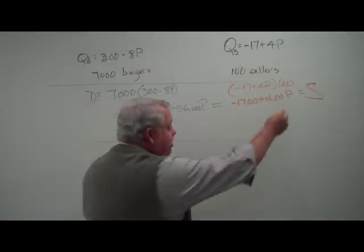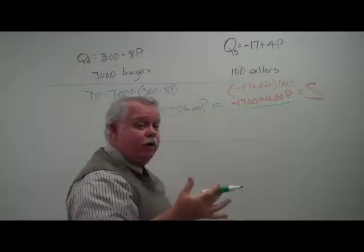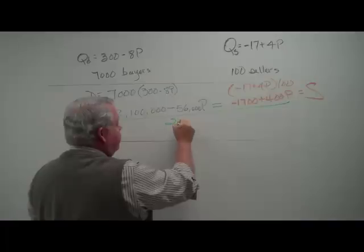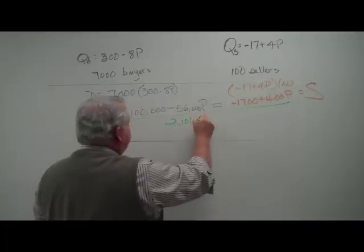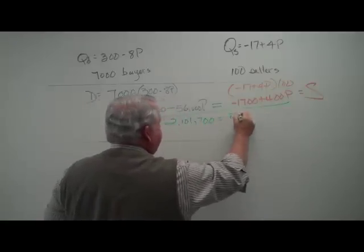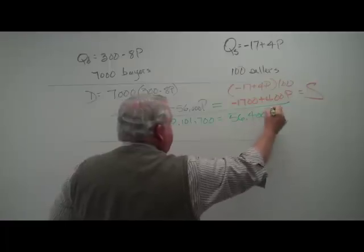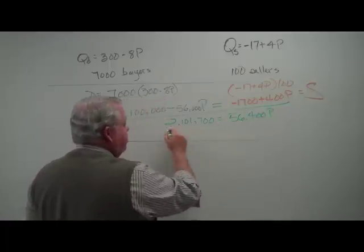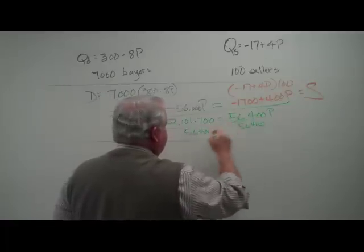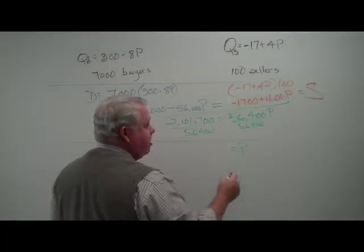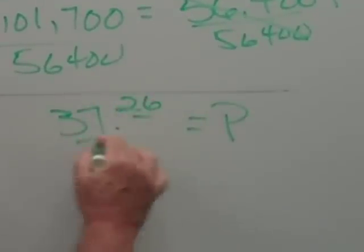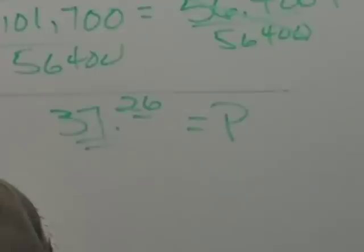We have one equation with one unknown, the letter P. So we're going to calculate the value of P. We're going to switch the numbers over here and get 2,101,700. We're going to move the 56,000 over there and get 56,400P. Then we're going to divide both sides and wind up with the price in the market equals, round it off now, $37.26. That's our equilibrium price in the market.